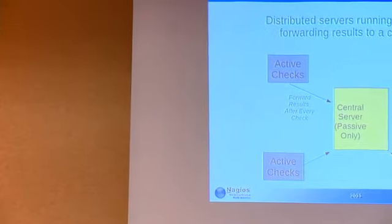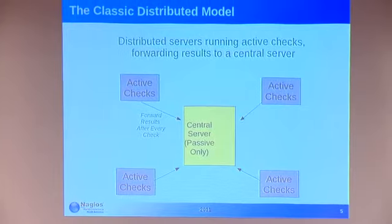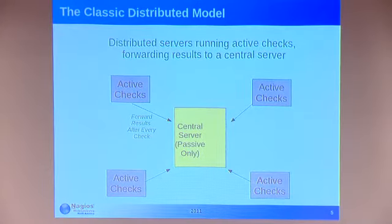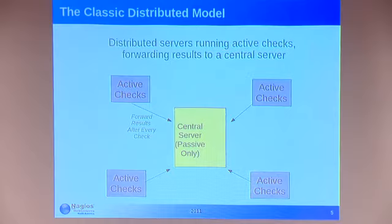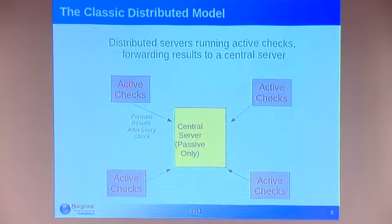The first model is what I call the classic distributed model, straight out of the Nagios Core documentation. The idea is that you have active checks running on external distributed servers. These servers initiate checks and process the results, then forward them on to a central server. The central server doesn't do any active checking on its own — all it does is receive results and act as a central viewer, while the distributed servers do the actual checking.